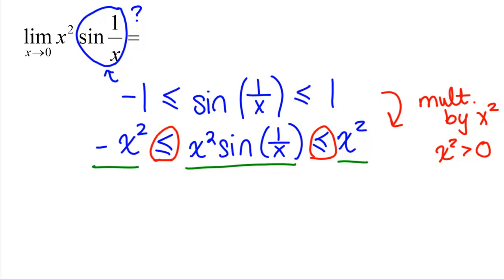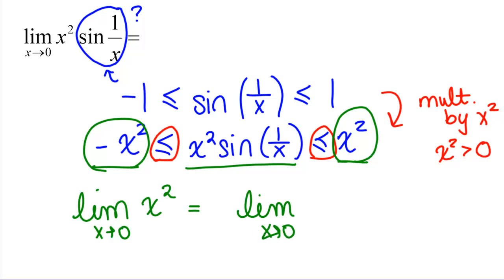But we have to know if these two functions we've picked on the edges are good enough. So we need to take the limit as x goes to 0 of x squared. And using our limit laws, that's the limit as x goes to 0 of x, the whole thing squared, which is 0 squared, which is 0, because the limit of the function x gives you back the number you put in.